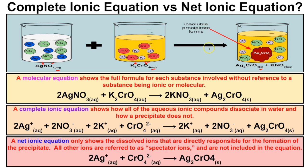From precipitation reactions we can also write what are called complete ionic equations and net ionic equations. So let's take a look at this chemical reaction first.